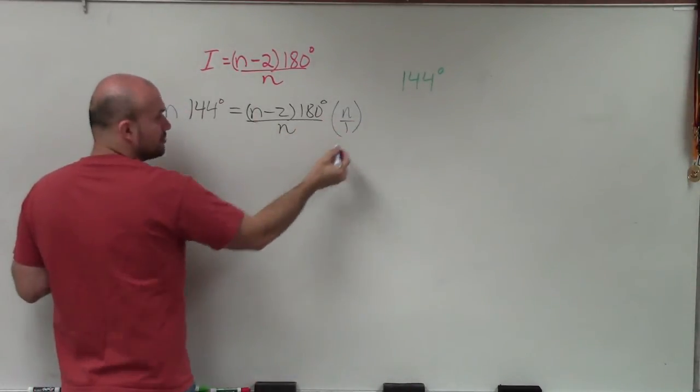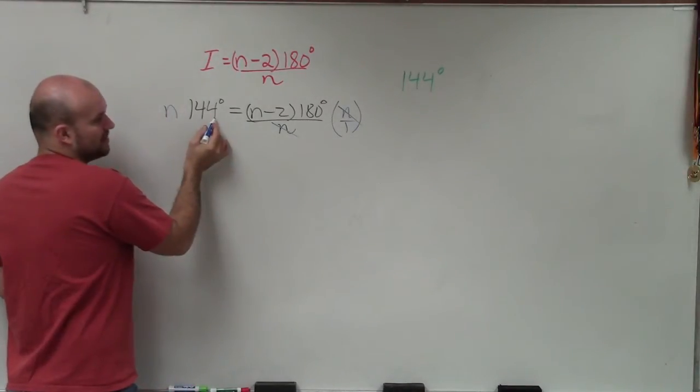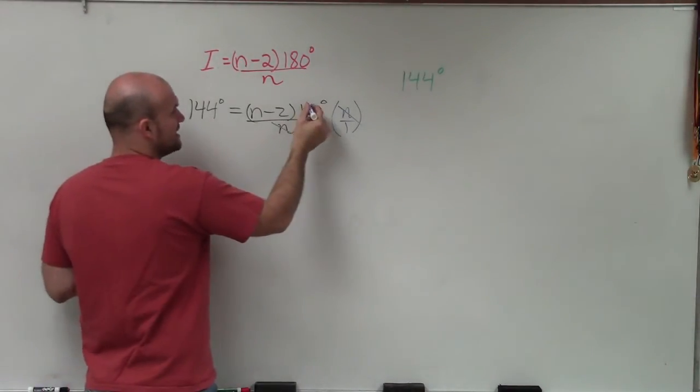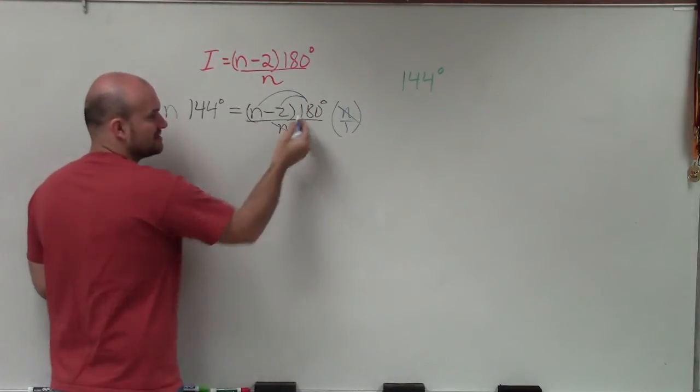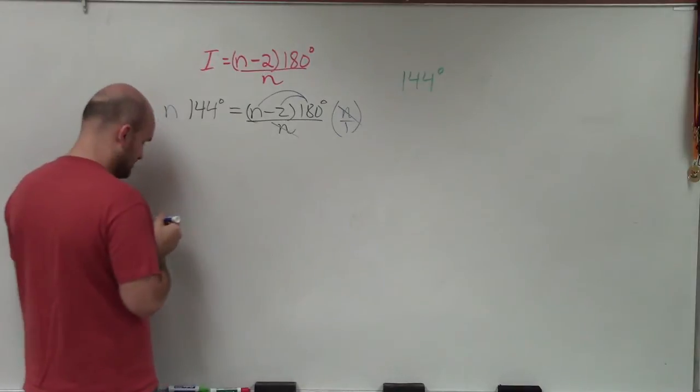Note that n is in the numerator. Therefore, those divide to 1, and I multiply on the left side. Now to get it outside the parentheses, I can apply the distributive property, because that's 180 degrees times the expression n minus 2. So I'm going to distribute that through.